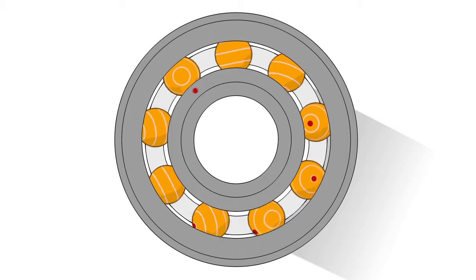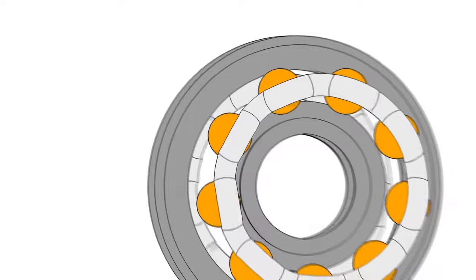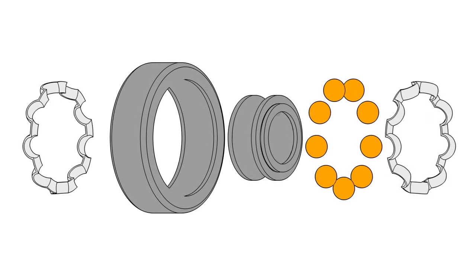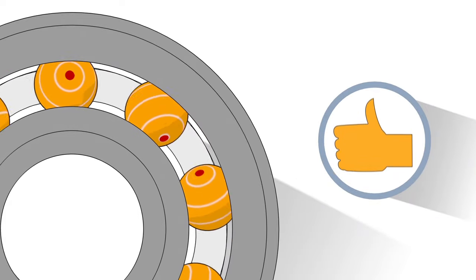Without bearings, there's no way to reduce the friction between moving metal parts. Bearings contain tiny steel balls inside that allow for parts to roll around each other as opposed to against each other.